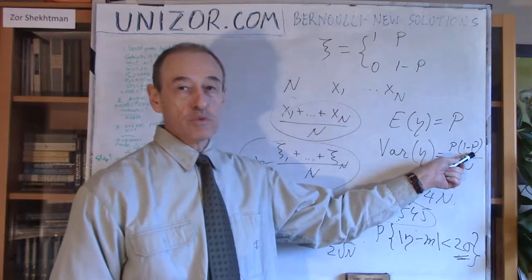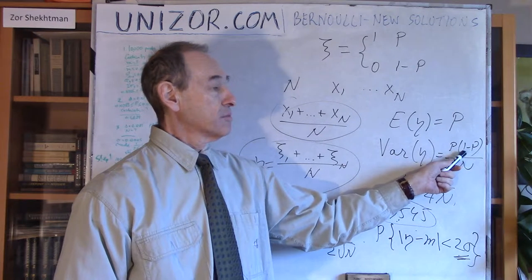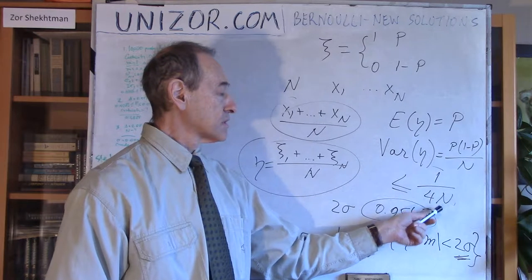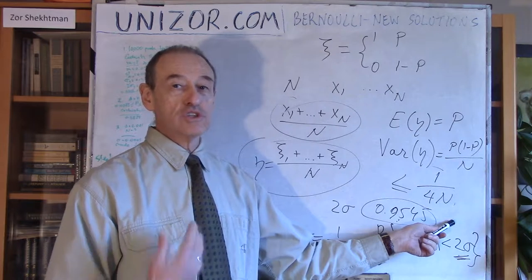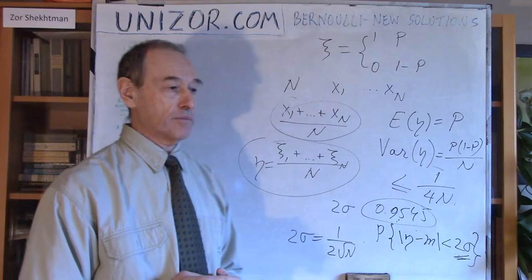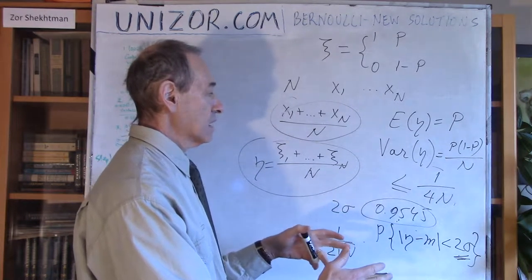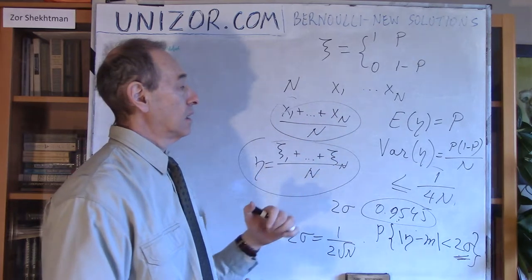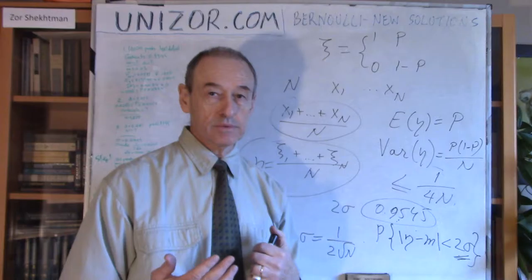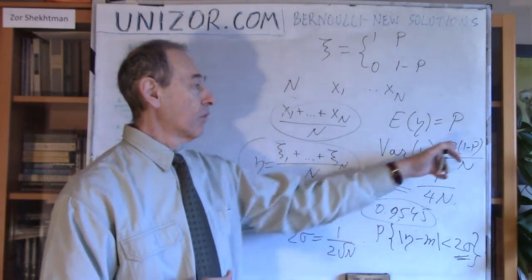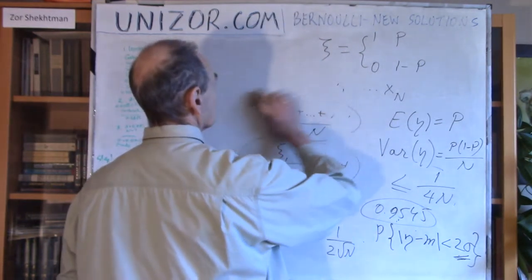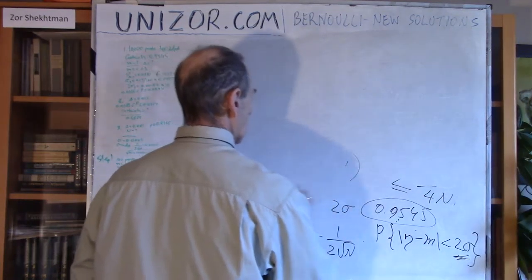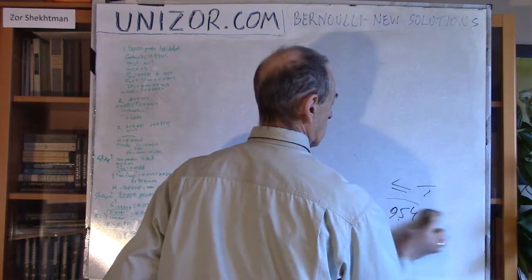So let me now switch from this crude approach to a more precise evaluation of variance using the sample. You will see what kind of results we get — we will get much better results with small P's. These are the same three problems I presented before using the crude variance evaluation. Now we will solve them with more precise evaluation based on the actual sample received.